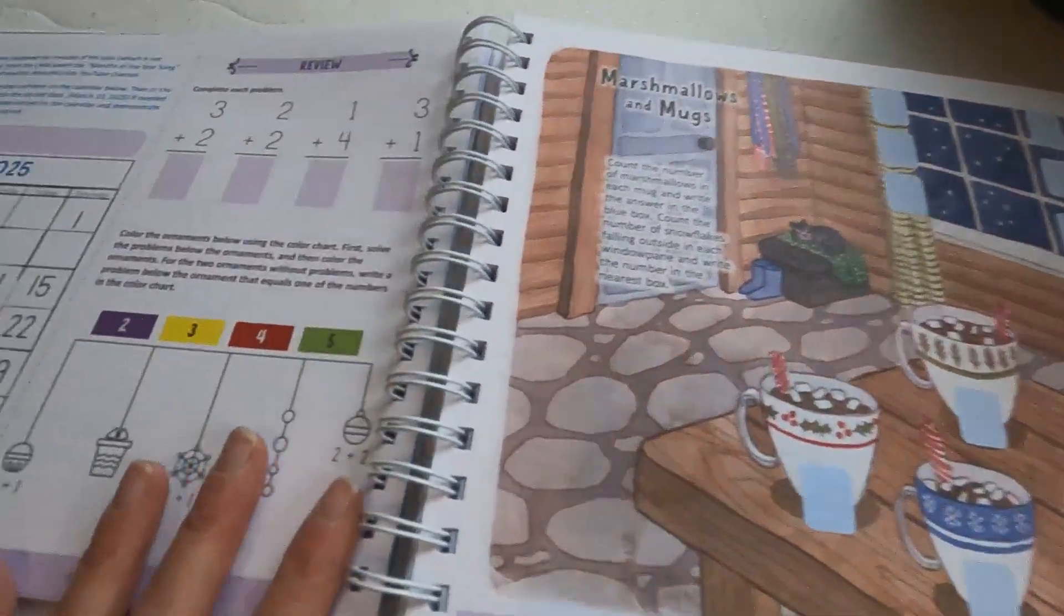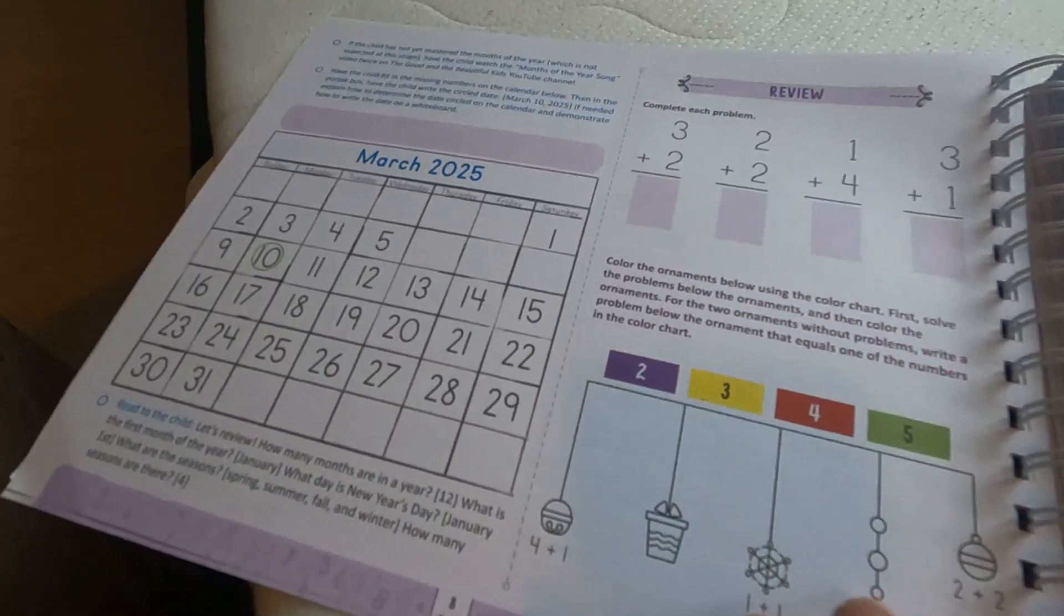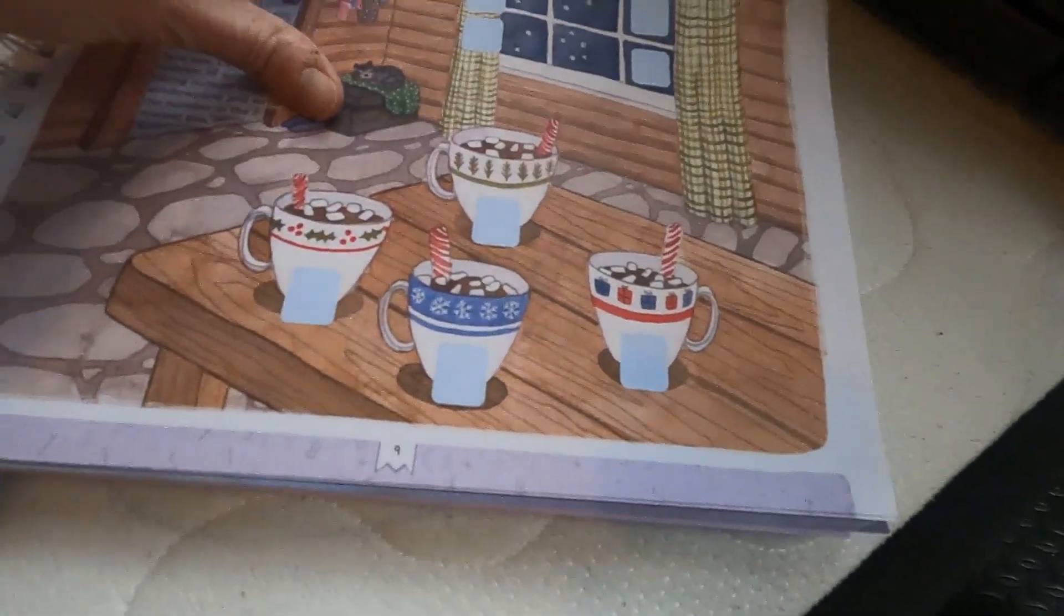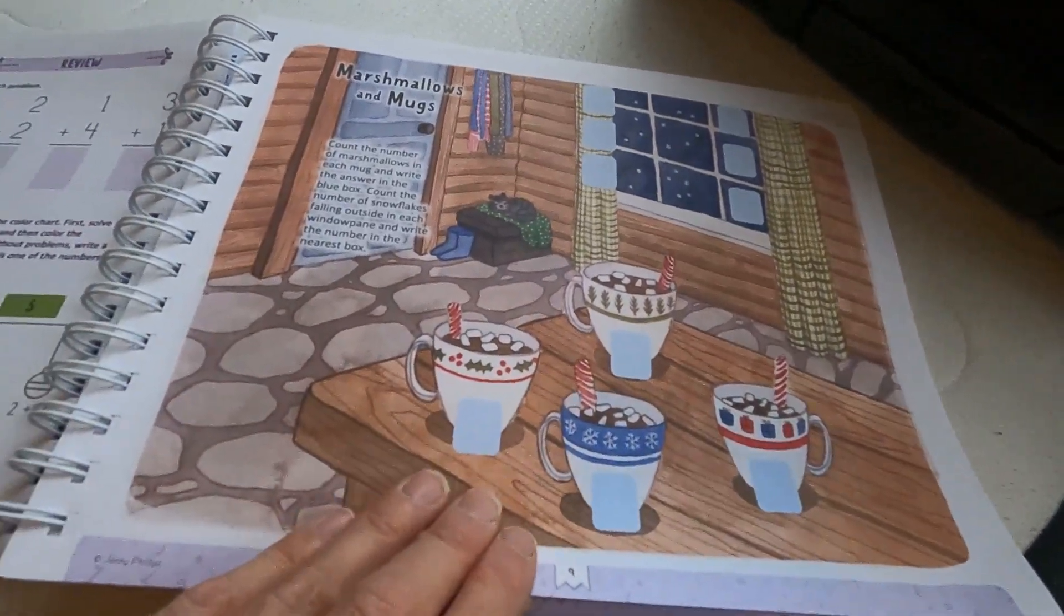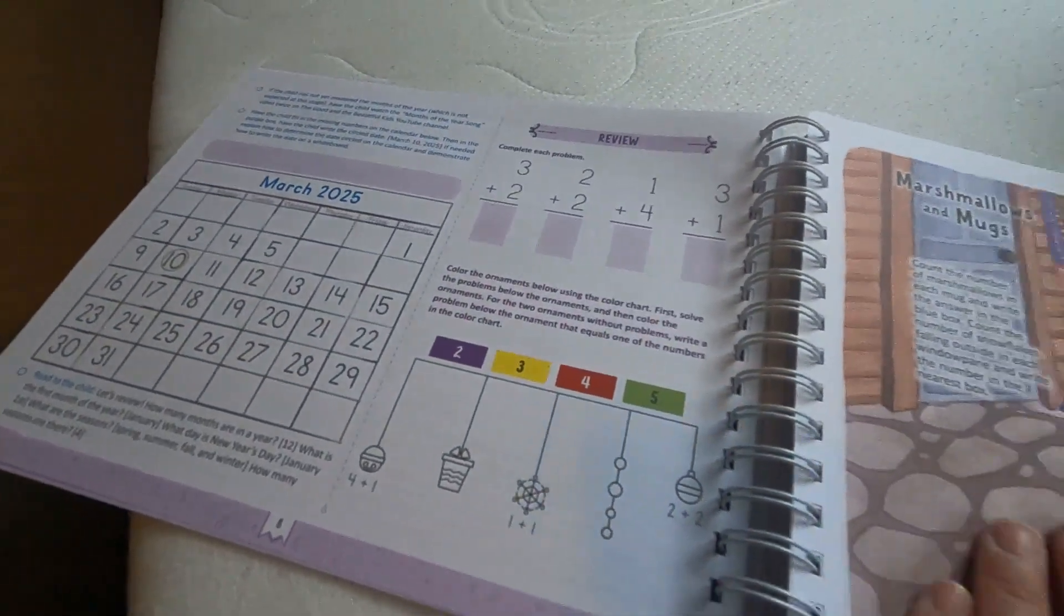So this is generally how the United States learns math this way, and they're known as one of the worst countries in the world as far as people who know math, right? Like if you when they rank all the countries.